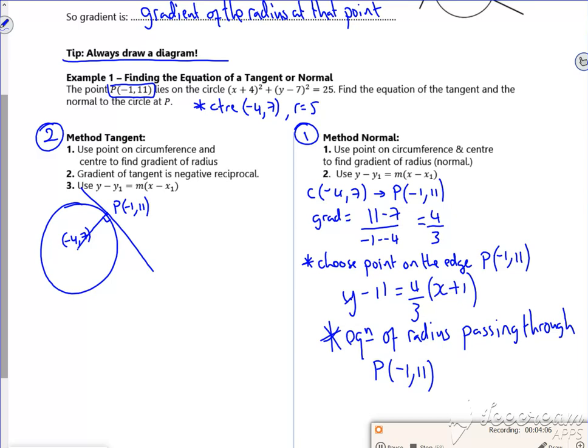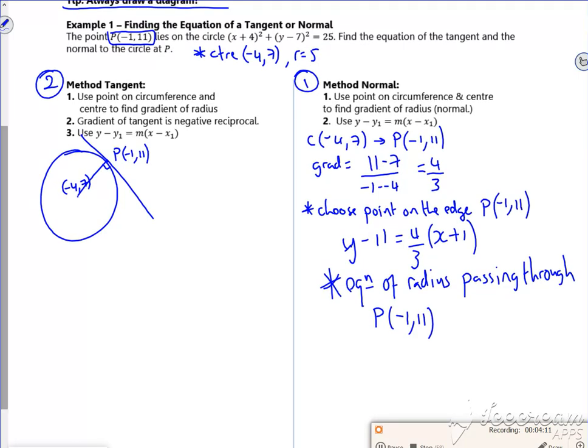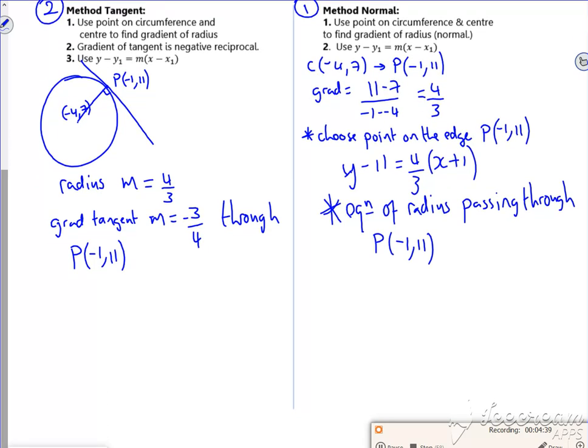So now I'm going to do this one, I want the tangent. So I know that my radius, the m is 4/3, so the gradient of the gradient of my tangent is perpendicular to it, so it's -3/4.